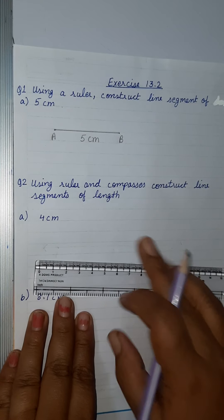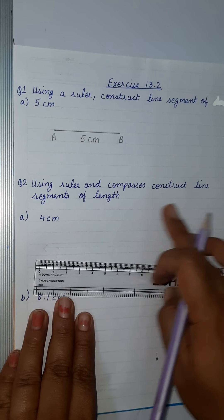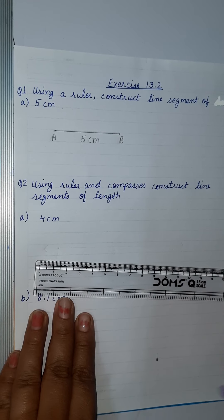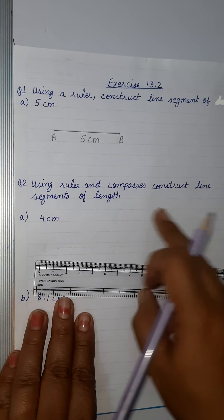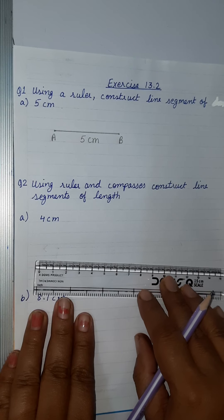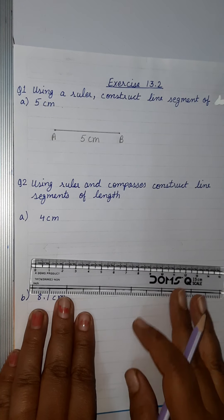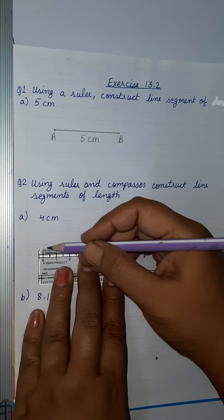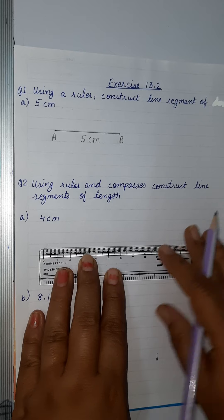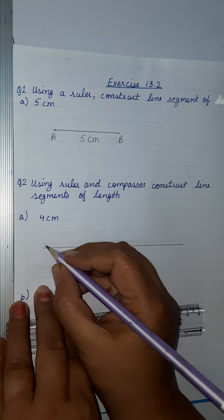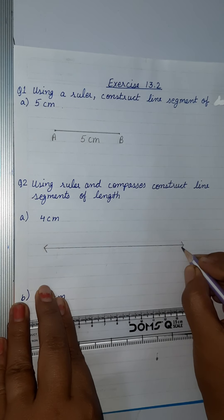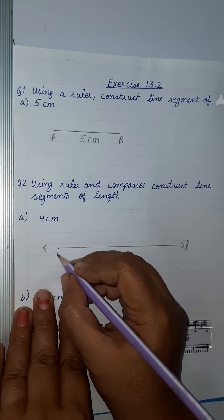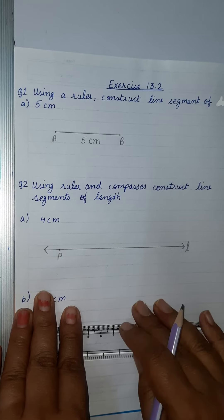Second question: using a ruler and compasses, construct a line segment of length 4 centimeters. Here we have to use our compass for constructing this line segment. First of all, we will draw a line — let's draw a line and name it as line l.